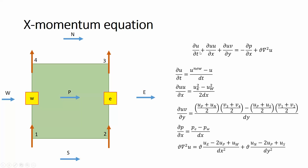I've added a time derivative term so I can iterate in time; at steady state this term vanishes, recovering the original steady-state U momentum equation. The first term, ∂u/∂t, is the time derivative of U velocity, written using a forward difference as (U_new − U_old) / dt. The dt depends on the CFL number if using an explicit scheme. The second term, ∂(u²)/∂x, uses a central difference: (u_E² − u_W²) / (2·dx), which is second-order accurate.